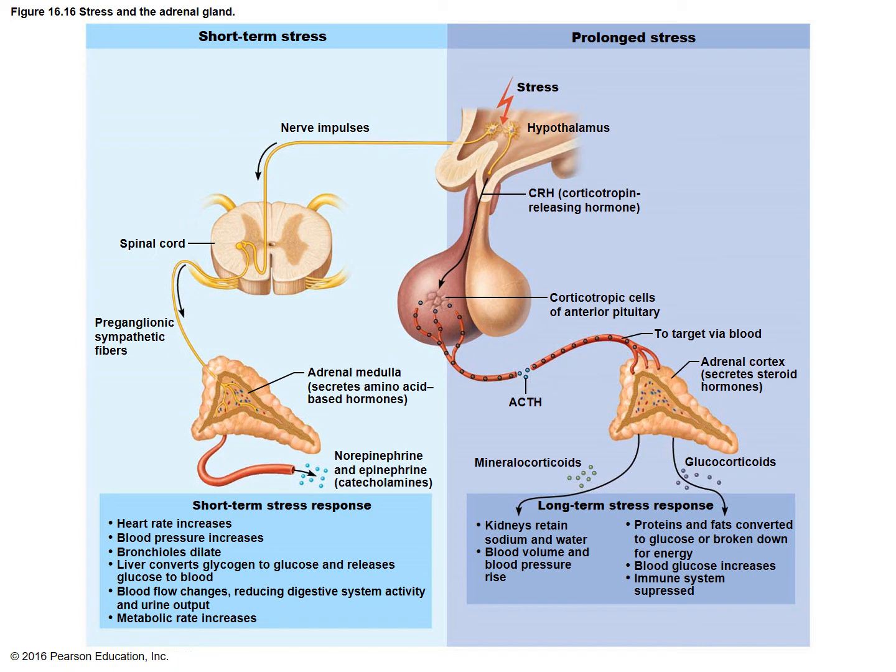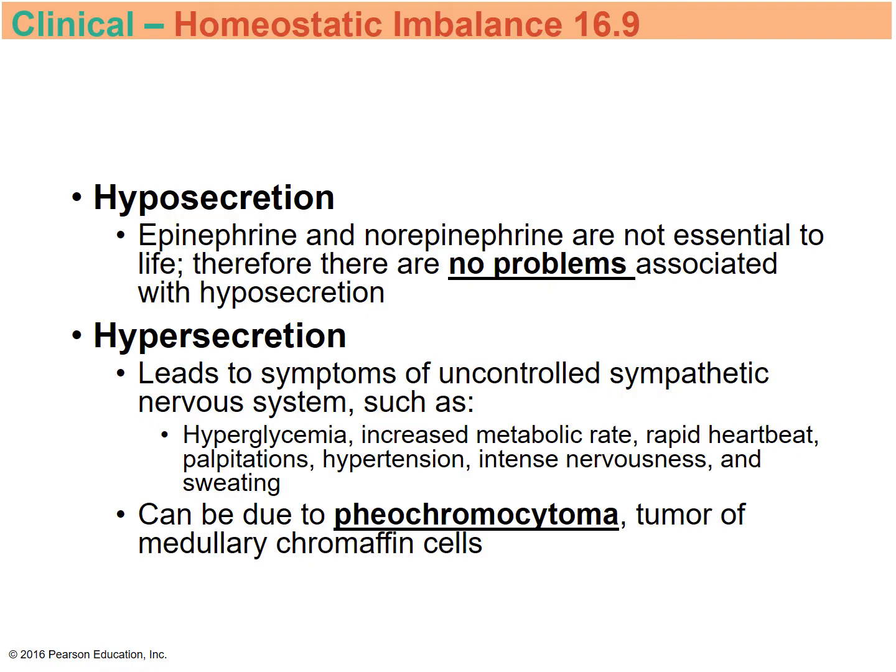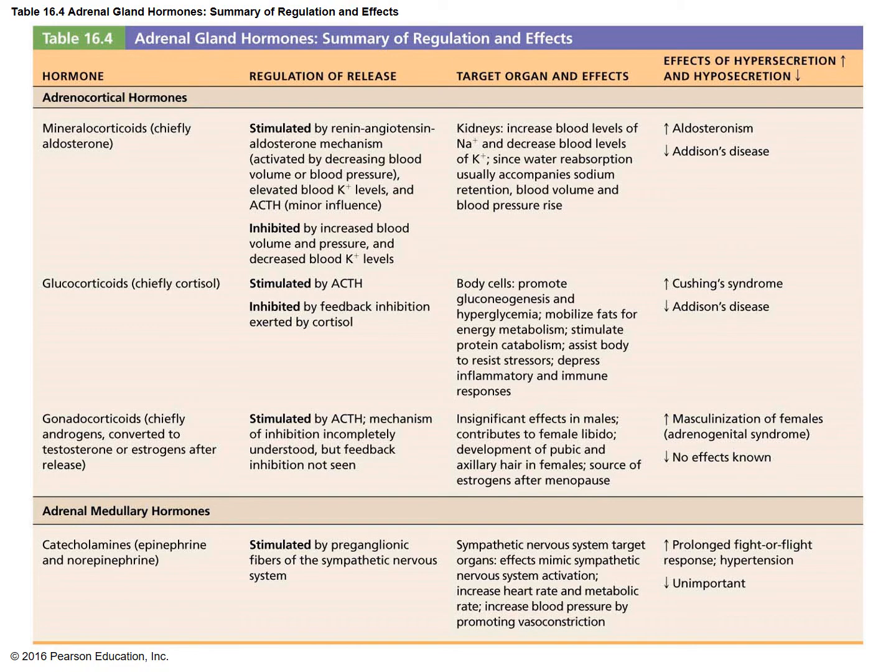This diagram shows long-term versus short-term stress effects with the adrenal gland. Hyposecretion causes no real problem. But hypersecretion — secreting too much — produces symptoms of the sympathetic nervous system: increased metabolic rate, fast heart rate, nervousness, high blood pressure, etc. This is tough on the body long-term and can be due to a tumor or other causes.